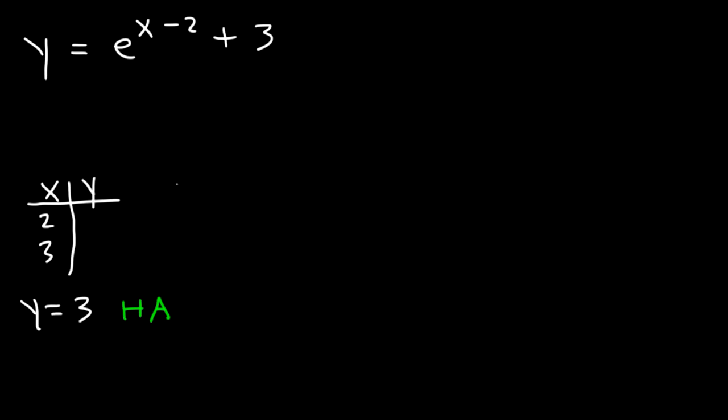Let's find out the y value when x is 2. 2 minus 2 is 0. e to the 0 is 1. Anything raised to the 0 power is 1. So 1 plus 3 equals 4. So when x is 2, y is equal to 4.